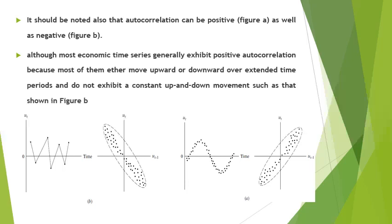It should also be noted that autocorrelation can be positive, as in figure A, or negative, as in figure B. Although most economic time series generally exhibit positive autocorrelation because most of them either move upward or downward over extended time periods. Positive autocorrelation occurs when an error of a given sign tends to be followed by an error of the same sign — positive errors are usually followed by positive errors and negative errors by negative errors. Negative autocorrelation occurs when an error of a given sign tends to be followed by an error of the opposite sign, for instance positive errors followed by negative errors. Negative autocorrelation is less common compared to positive autocorrelation.